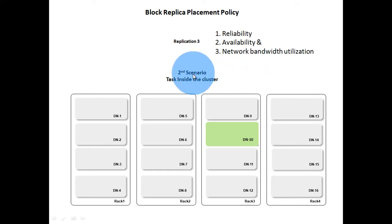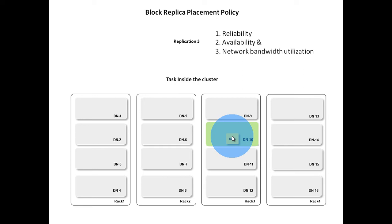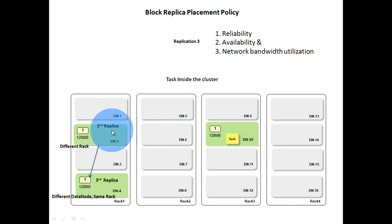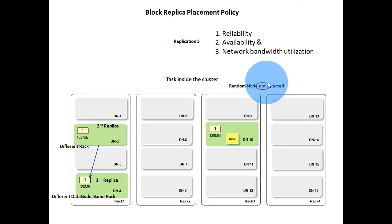The second scenario is when data is written by some task inside the cluster. Consider a task running on data node 10 that writes data into HDFS. In this scenario, the first replica is stored on the data node where the writer task exists — in our case, data node 10. The second and third replicas are stored in the same way as in the previous scenario — in our case, data node 2 and data node 4 of rack 1. The only difference is that a data node is not chosen randomly for the first replica; rather it is written on the same data node where the task is running.